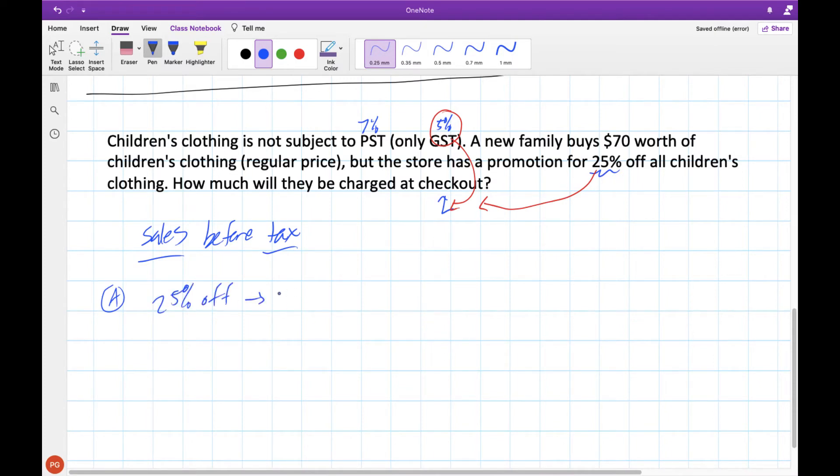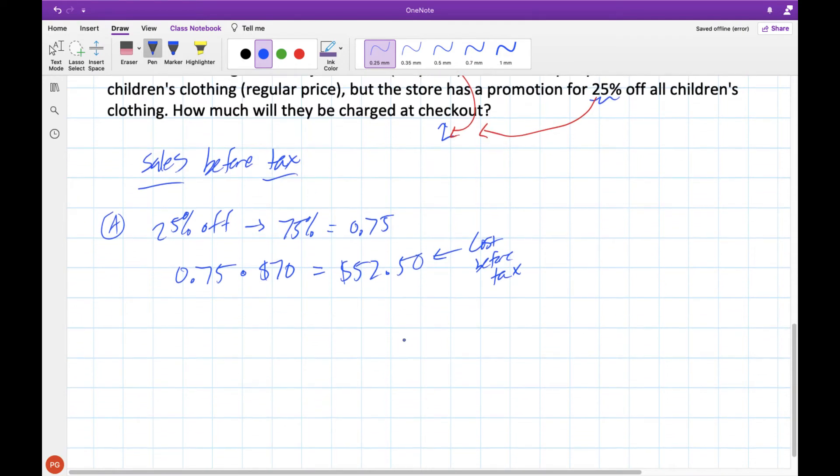So if we wanted to first deal with this 25% off, remember 25% off, that means 75% of the regular price, which as a decimal would be 0.75. So if we want 0.75 of $70, we would do 0.75 times $70, which gives us $52.50. So this is the cost before tax, but after this 25% off promotion. And this would be the number that we would be charging tax on.